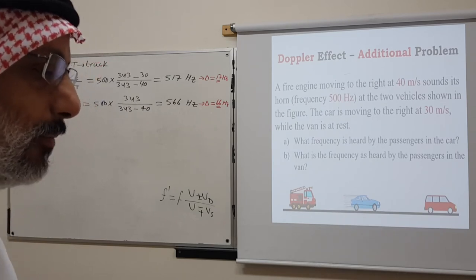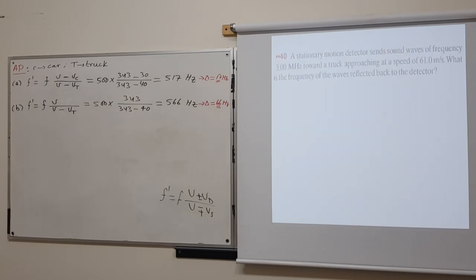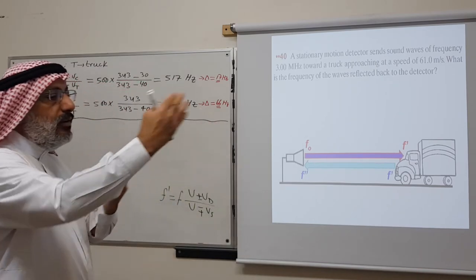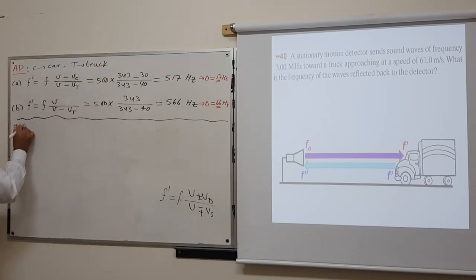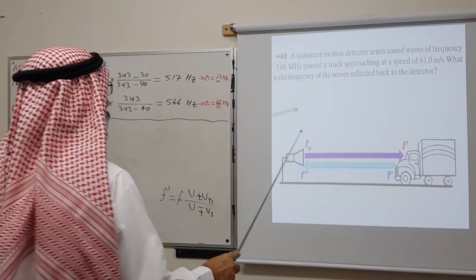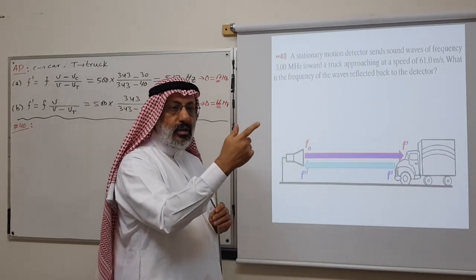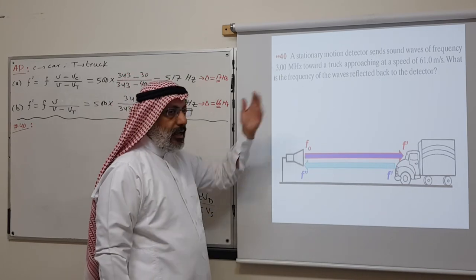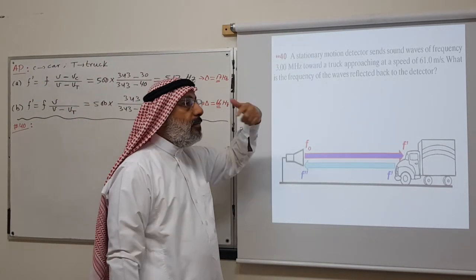Now let's look at problem 40 from the textbook, which involves reflection of sound waves. A stationary motion detector — like a radar — sends sound waves of frequency 3 MHz toward a truck approaching at 61 m/s. We cannot hear 3 MHz; our ears hear up to 20 kHz. The detector sends a signal, it hits the truck and reflects back. What is the frequency of the waves reflected back to the detector?